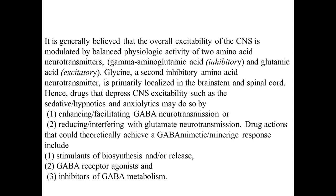Glycine is a secondary inhibitory amino acid neurotransmitter primarily localized in the brainstem and spinal cord. Drugs that depress CNS excitability — such as sedative, hypnotic, and anxiolytic drugs — may do so by enhancing or facilitating GABA neurotransmission, or by reducing or interfering with glutamate neurotransmission. Since glutamate is excitatory, blocking its activity eliminates excitation and helps maintain a balanced state.